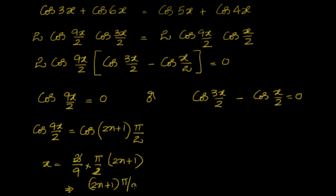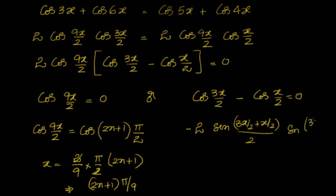For the second equation, this is of the form cos C minus cos D, which equals minus 2 sin((C+D)/2) sin((C-D)/2). Here C is 3x/2 and D is x/2, so (C+D)/2 is (3x/2 + x/2)/2 = x, and (C-D)/2 is (3x/2 - x/2)/2 = x/2. So the equation becomes sin x equal to 0 or sin(x/2) equal to 0.